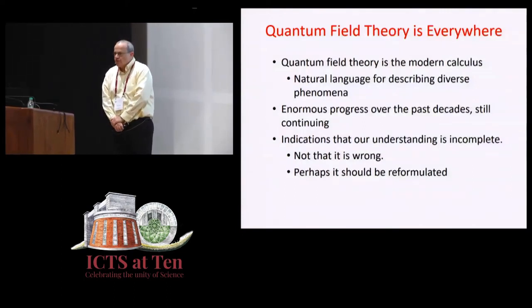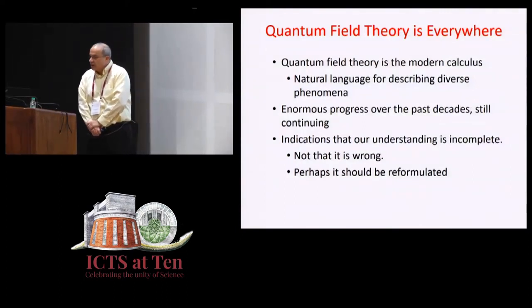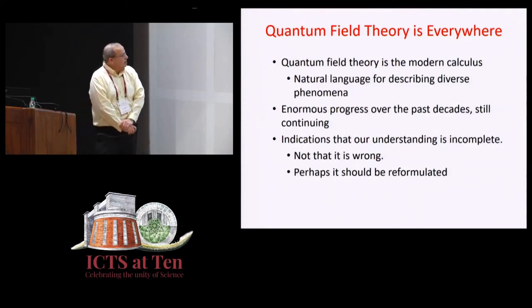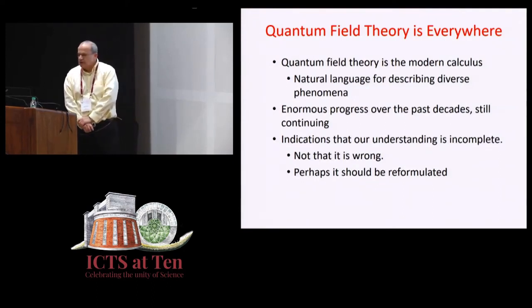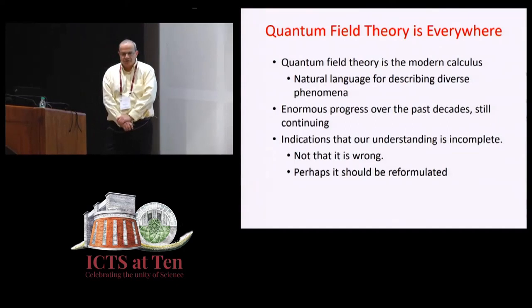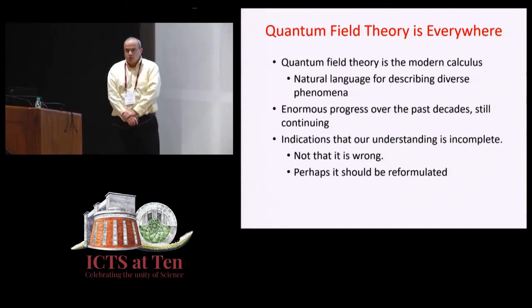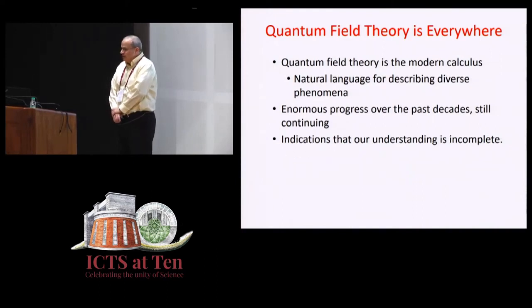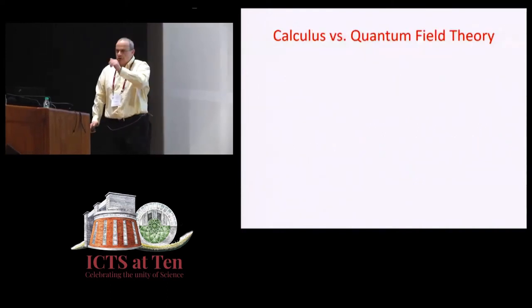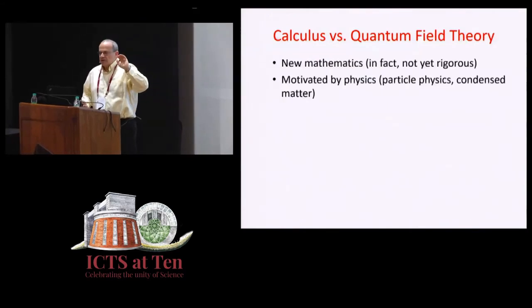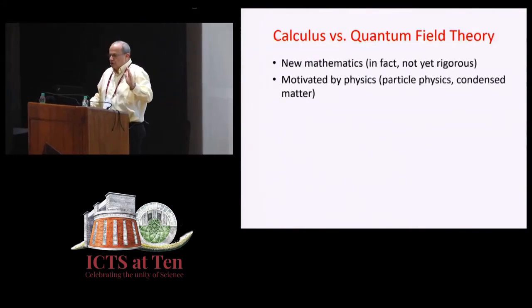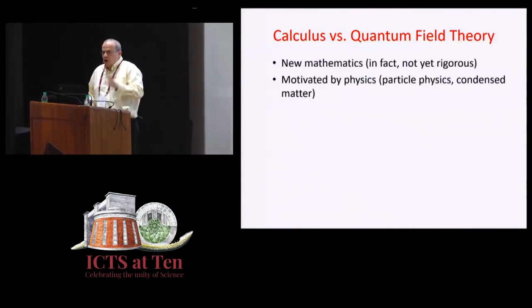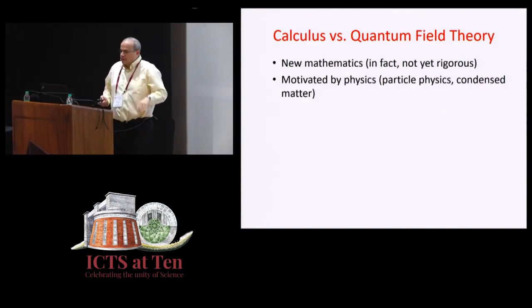And since I've been saying that before and I was criticized, I would like to make it absolutely clear, it's not that our understanding is wrong, I think that big pieces are still missing, and perhaps the theory should be reformulated. So I'd like to go back to the analogy with calculus, and make this analogy more complete, and see how, as a scorecard, how quantum field theory does relative to calculus.